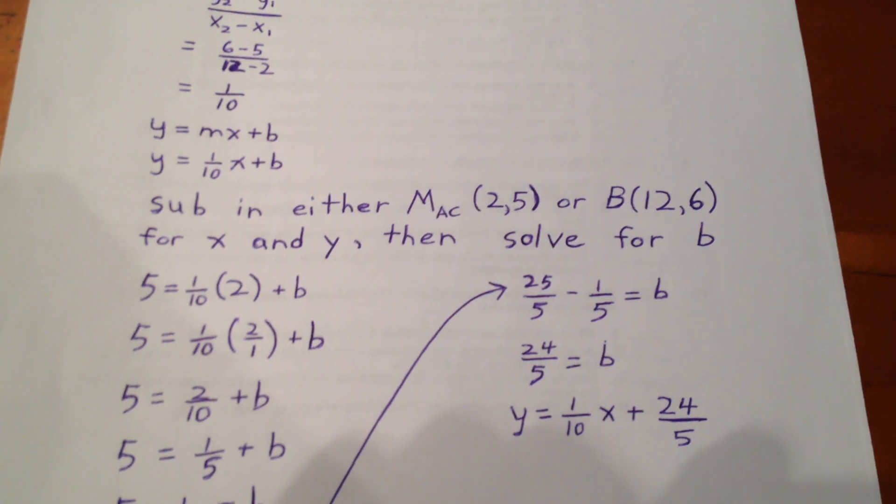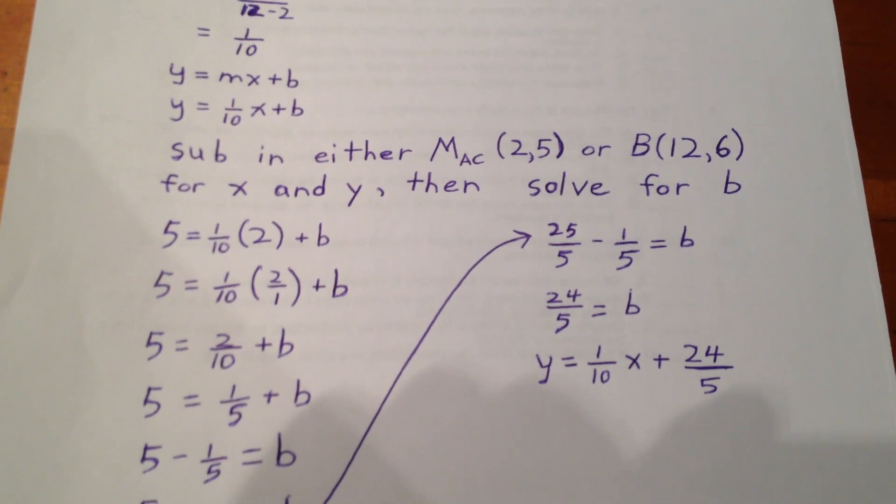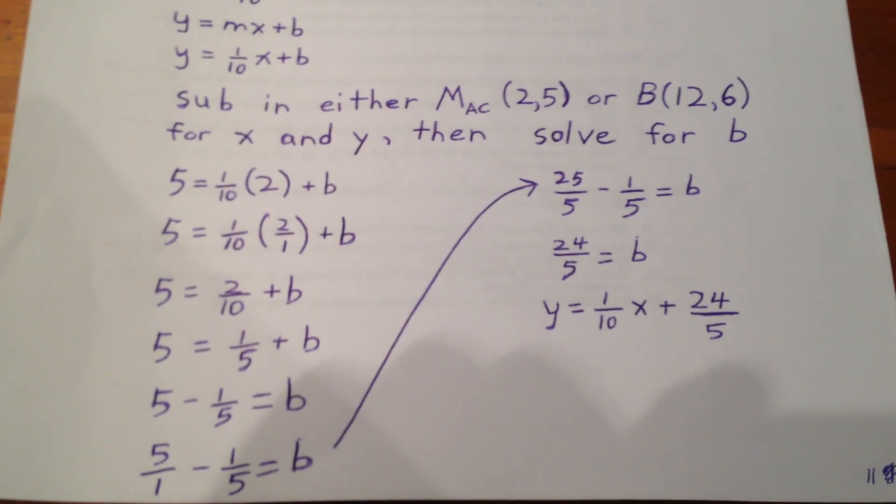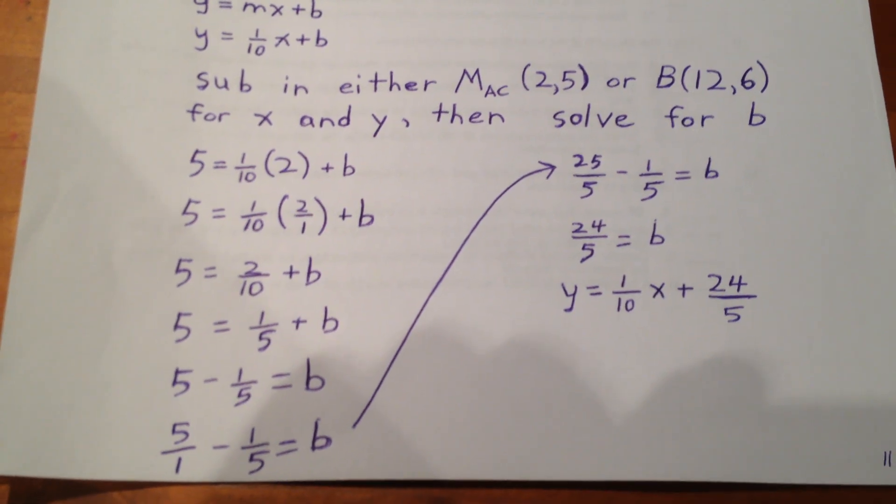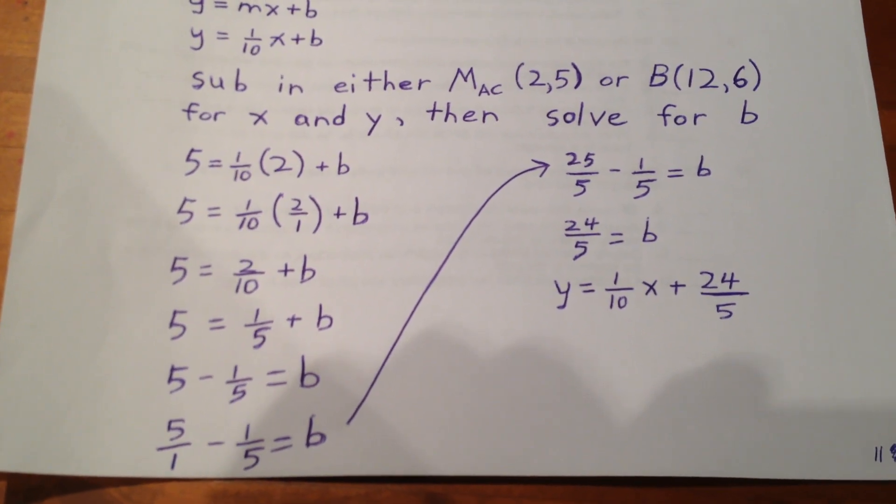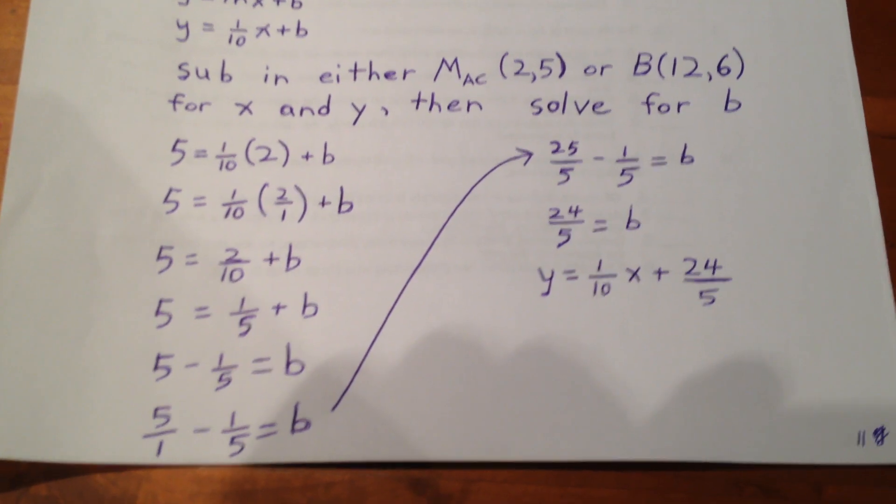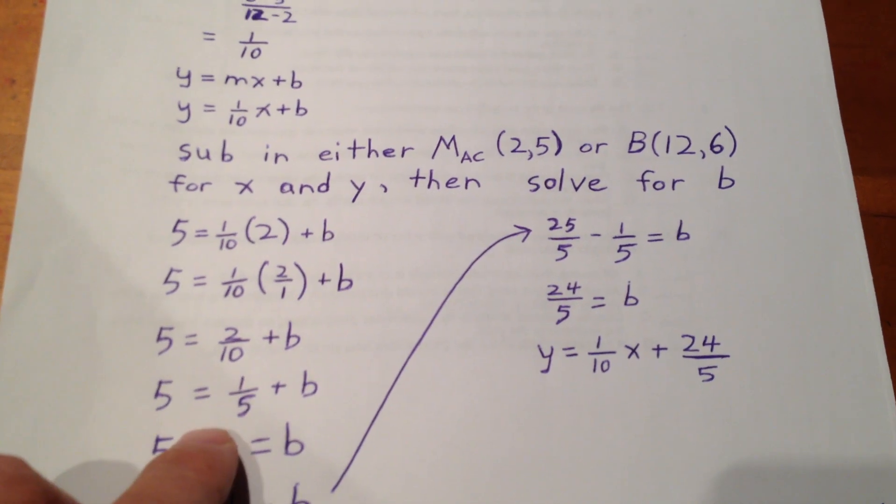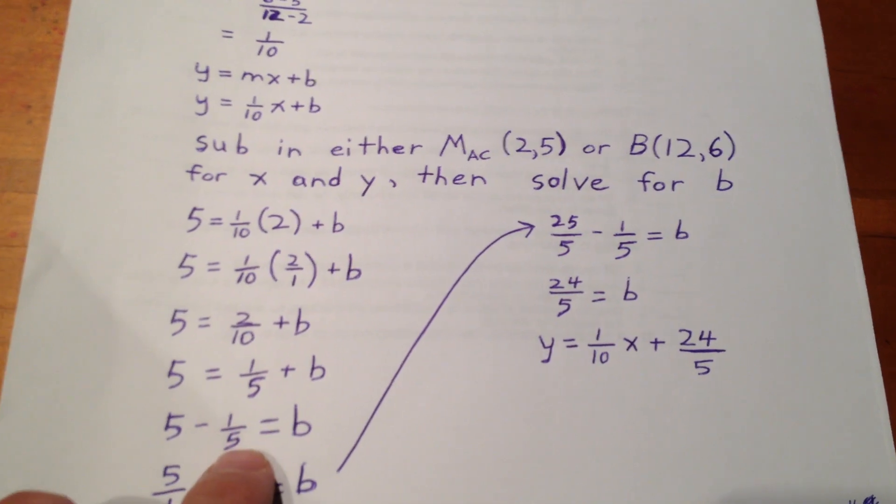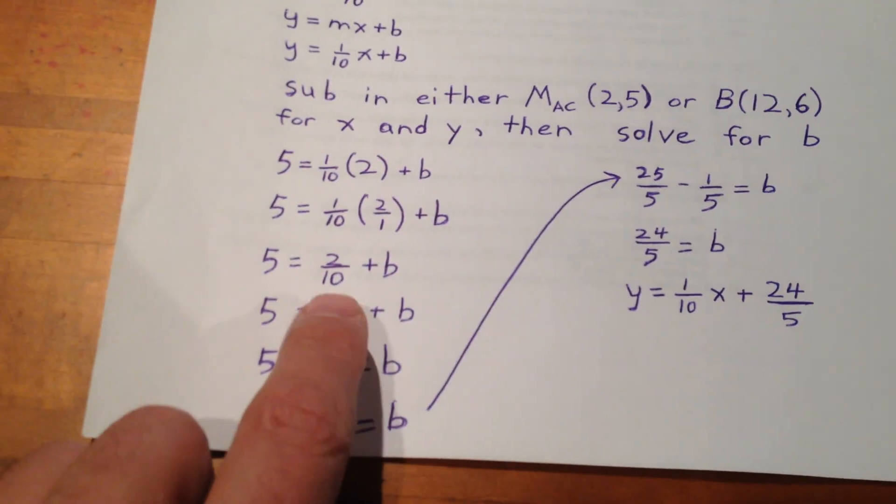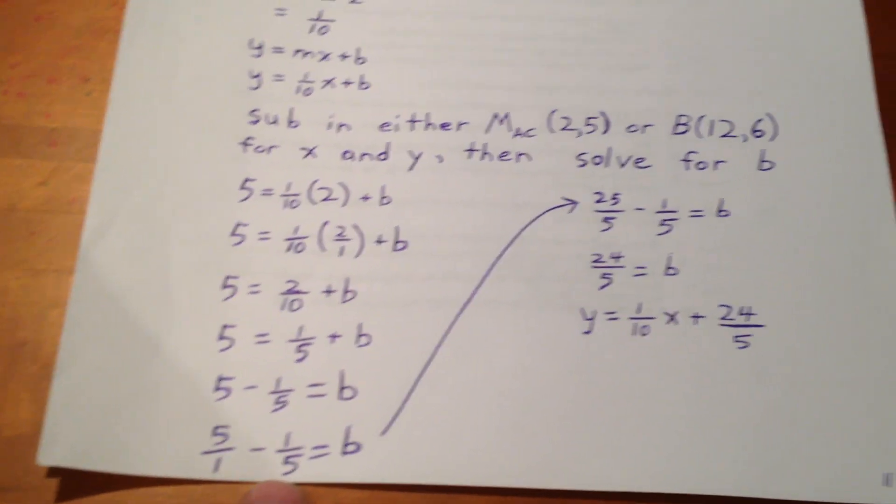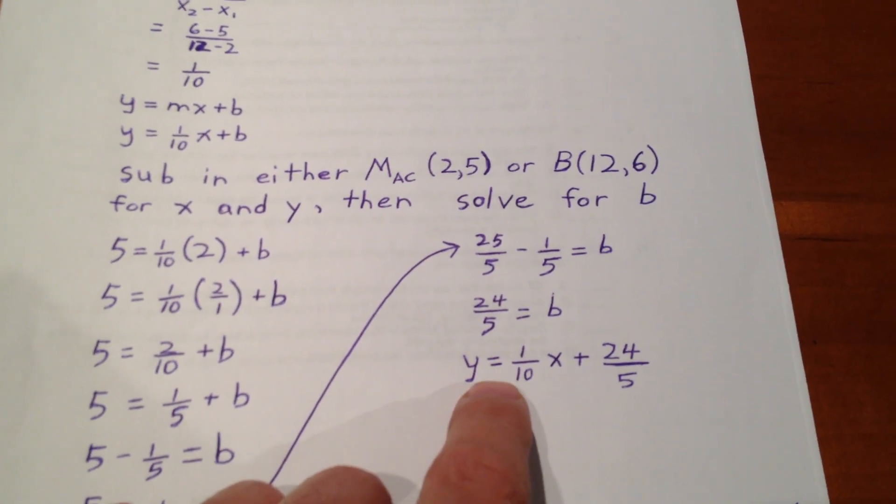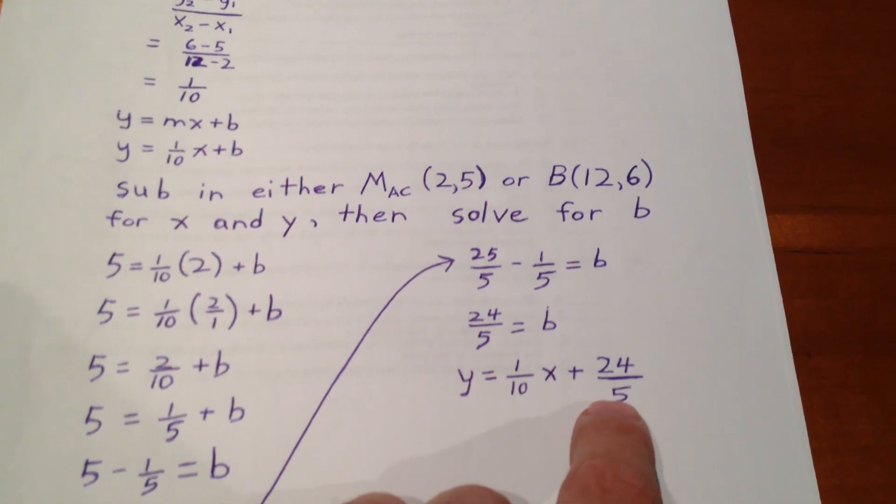We can then sub in either point that we know from the straight line into that equation. In this case, I chose to use the midpoint 2, 5, but I could have just as easily used the far vertex 12, 6. Using 2, 5, we sub in 5 for y and 2 for x. And doing some simple solving or evaluating at first, we get 5 is equal to 1 fifth plus b. We can then subtract 1 fifth from both sides, and we get b is equal to 24 over 5, which means y is equal to 1 tenth x plus 24 over 5.